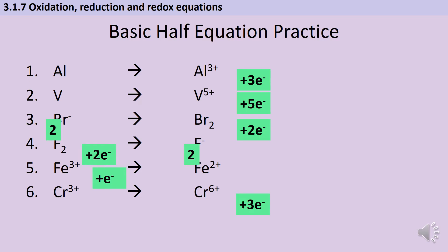For the first question we've added three electrons to the right hand side to balance out the charge on the aluminium ion. Then we've added five electrons to the vanadium ion. We've balanced the third equation by using two bromide ions, and those two single negative charges are counteracted by two electrons on the right hand side. In question four we've balanced the number of fluoride ions and balanced the charge by adding two electrons to the left. In question five we've added a single electron to reduce the iron 3+ ion to iron 2+. And in question six our chromium 3+ ion has been oxidized to hexavalent chromium by adding three electrons on the right hand side.